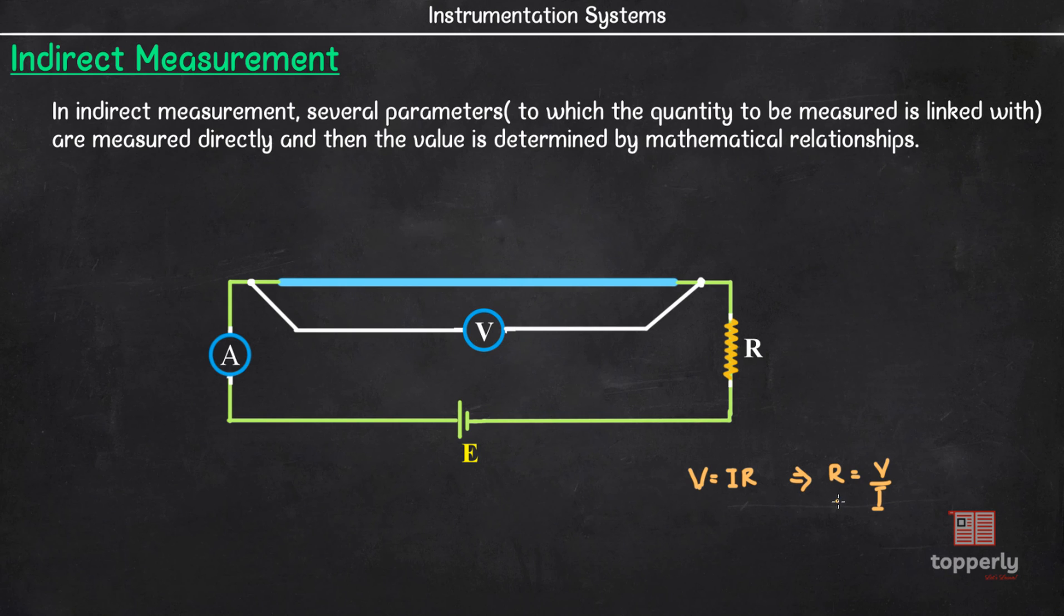Usually we take multiple readings, calculate the resistance for each case and take the average value to increase accuracy. So, in a nutshell, we are measuring the voltage across the conductor and current through the conductor which are parameters of the conductor functionally related to the resistance. And then we are using the mathematical relationship of Ohm's law to calculate the value of resistance.